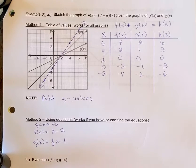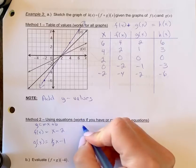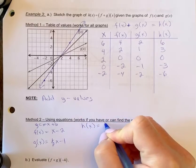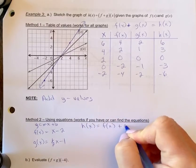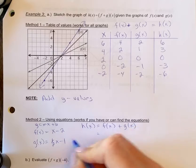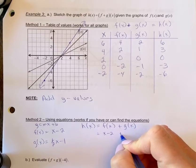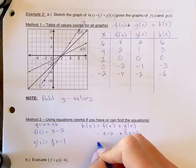Sometimes you may be given the equations and then this strategy might work for you as well. So to find h of x, we can add these equations. So we're going to have x minus two plus one half x minus one.